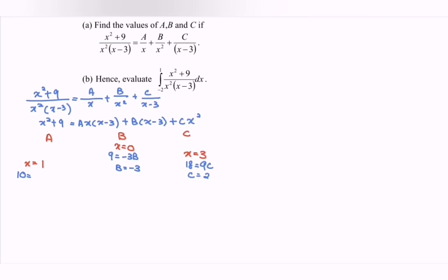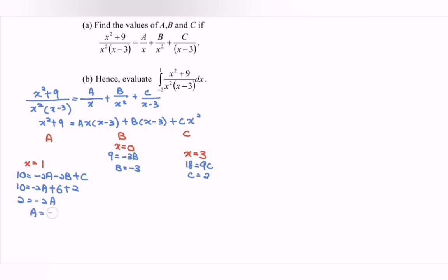Finally, if we substitute x equal to 1, we will have a multiplied with 1, multiplied with negative 2 — so we have negative 2a. Then negative 2b, then c. Substitute: 10 equals negative 2a plus 6 plus 2. So we have 8 on the right, then 2 equals negative 2a. So a will be equal to negative 1.